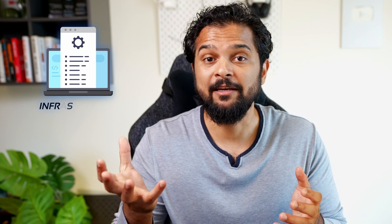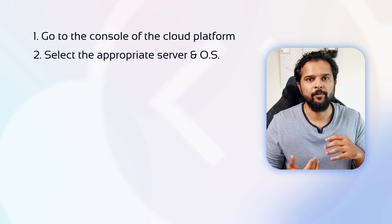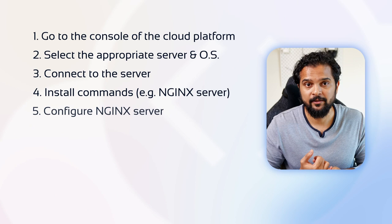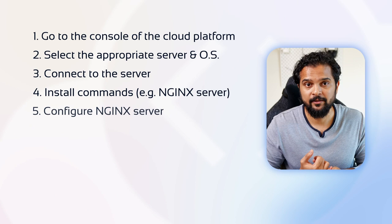Now let's come to the second part, which is about infrastructure automation. Let's say we have a task to provision a server in the cloud — install an Ubuntu operating system, then install an Nginx server, then install the application the devs have worked on. In the manual way, a sysadmin or DevOps engineer would go to the console of the cloud platform, select the appropriate server and operating system, connect to the server through the terminal, and run commands to install and configure Nginx and the application. But what if we are asked to do this hundreds or thousands of times? And what if the requirements change — for example, replacing Nginx with an Apache server? It then becomes complicated, tedious, and repetitive.